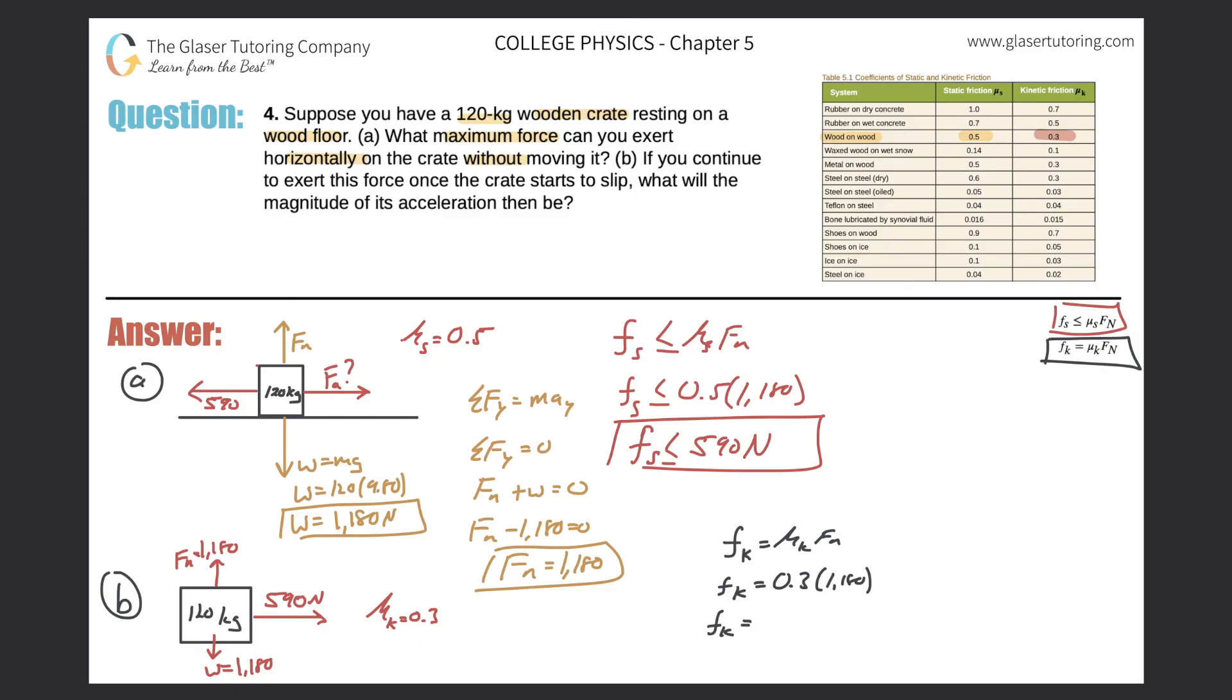I think I did an addition there. Sorry, 0.3 times 1180 is 354. So this is 354 newtons. Now this is the frictional force of kinetic friction. So what did I just solve for in terms of my picture over here? I just found this vector, the frictional force, the force that's opposing the motion. So that's 354 newtons.